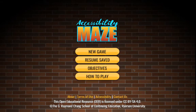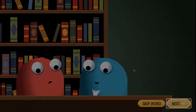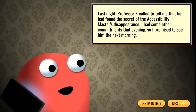New game. Professor X and I were doing research on the mysterious accessibility master. Rumors suggested he had found a great secret that would make the entire world accessible. Unfortunately, the master's work was never published and he himself disappeared without a trace.